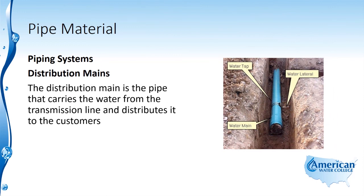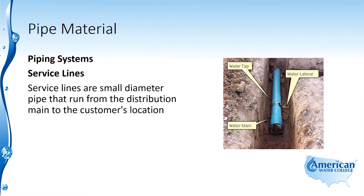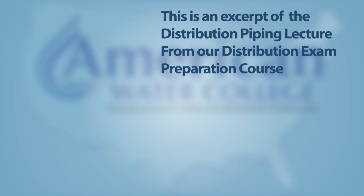The distribution main is the pipe that carries the water from the transmission line and distributes it to the customers. Service lines are small diameter pipe that run from the distribution main to the customer's location.